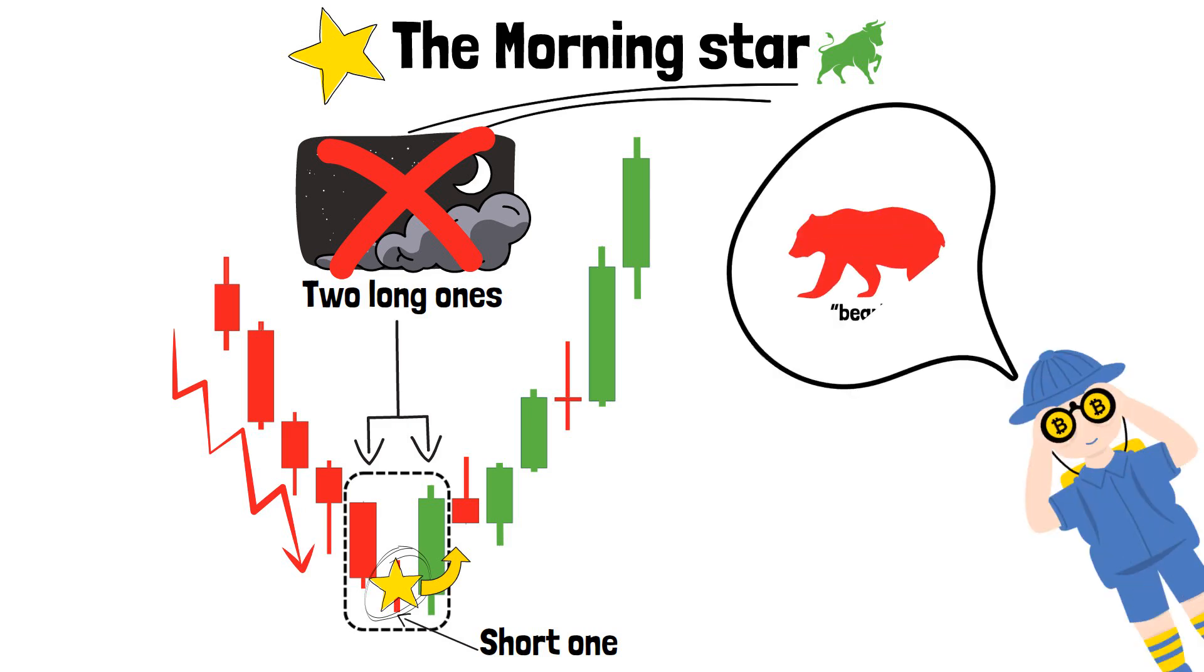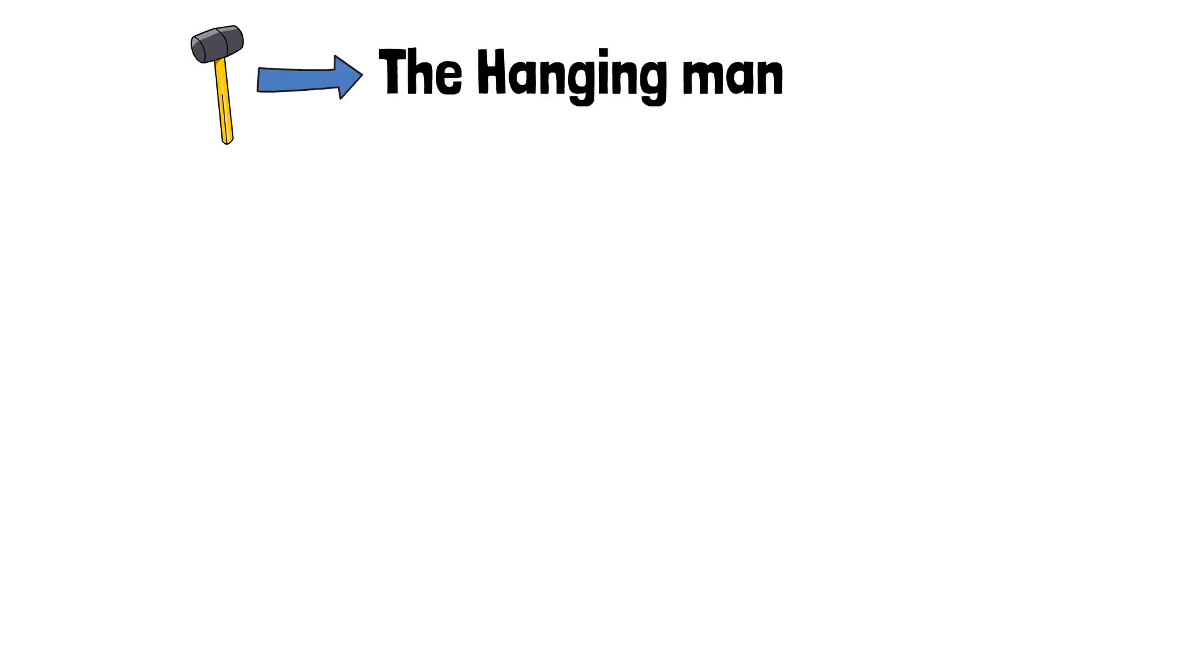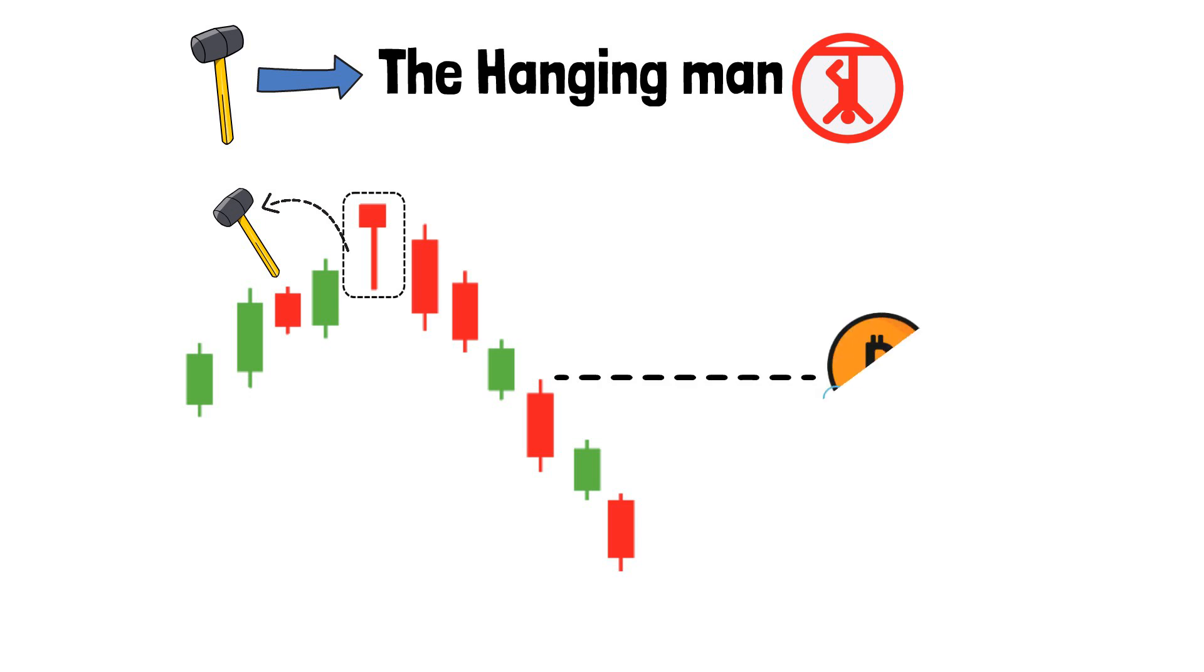Now, let's take a look at some bearish candlestick patterns. The opposite of the hammer is known as the hanging man. Even though it looks like a hammer, it signifies the opposite: a potential reversal of the price movement. Unlike the hammer, this pattern is formed at the top of an uptrend.